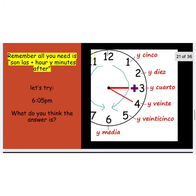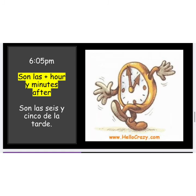Let's try 6:05, or 5 minutes after 6. Remember, all you need is son las, then you put the hour, E, and the minutes after. So we would start off by writing son las. Then we put the hour we're dealing with — in this example, we're talking about 6, so we have son las seis. Then we add the number of minutes it is after 6. In this example, it is 5 minutes after, so we would add E cinco.